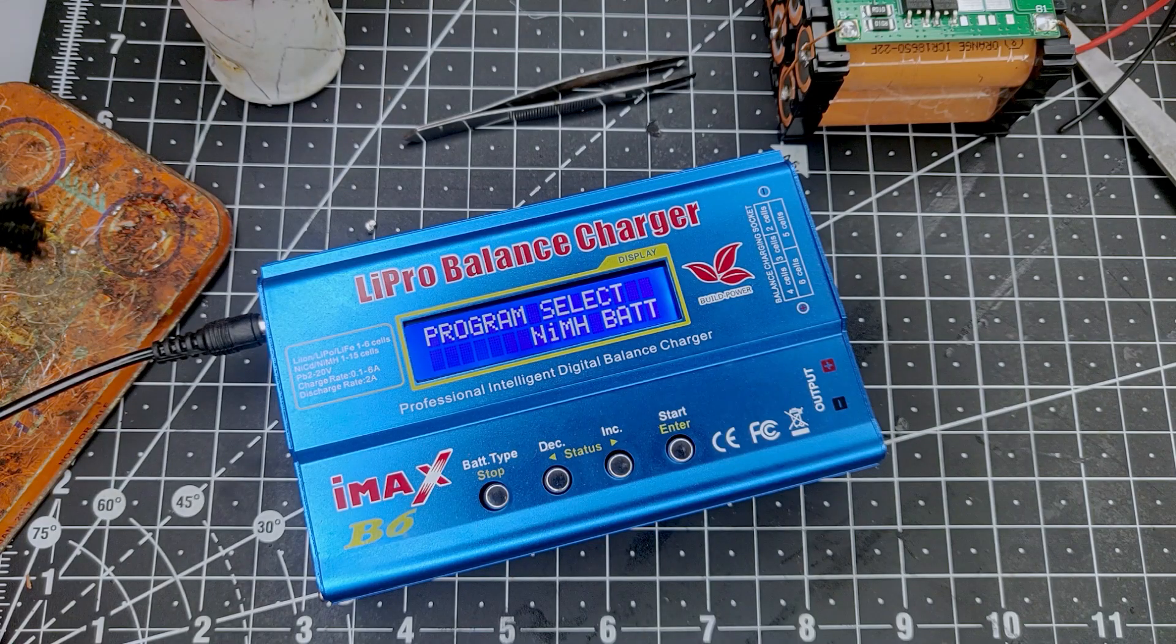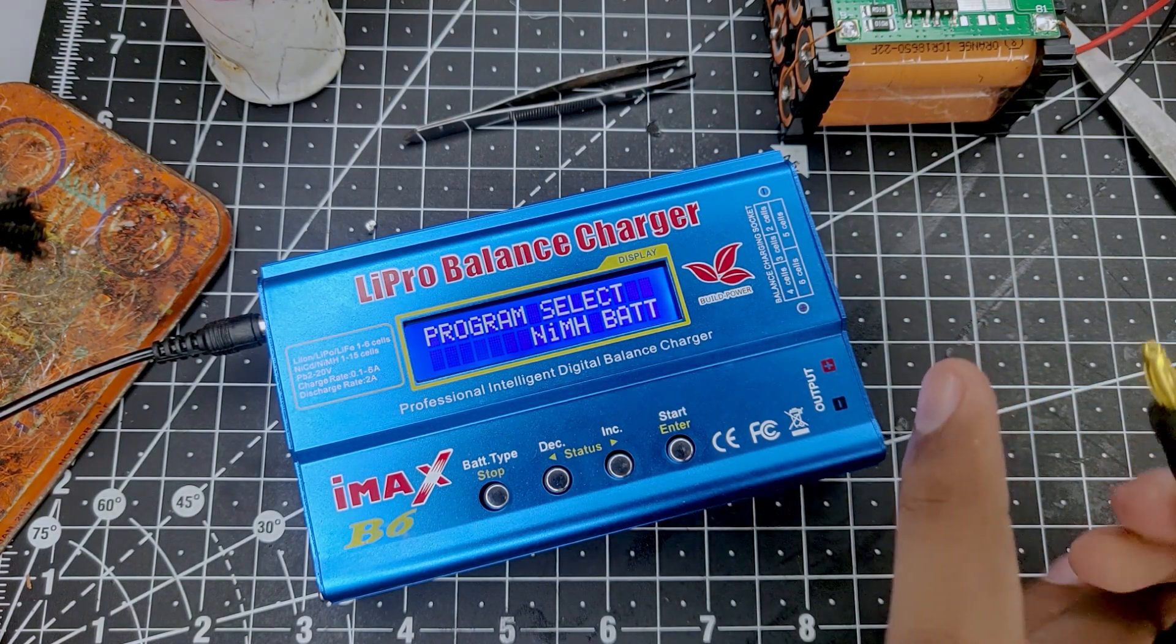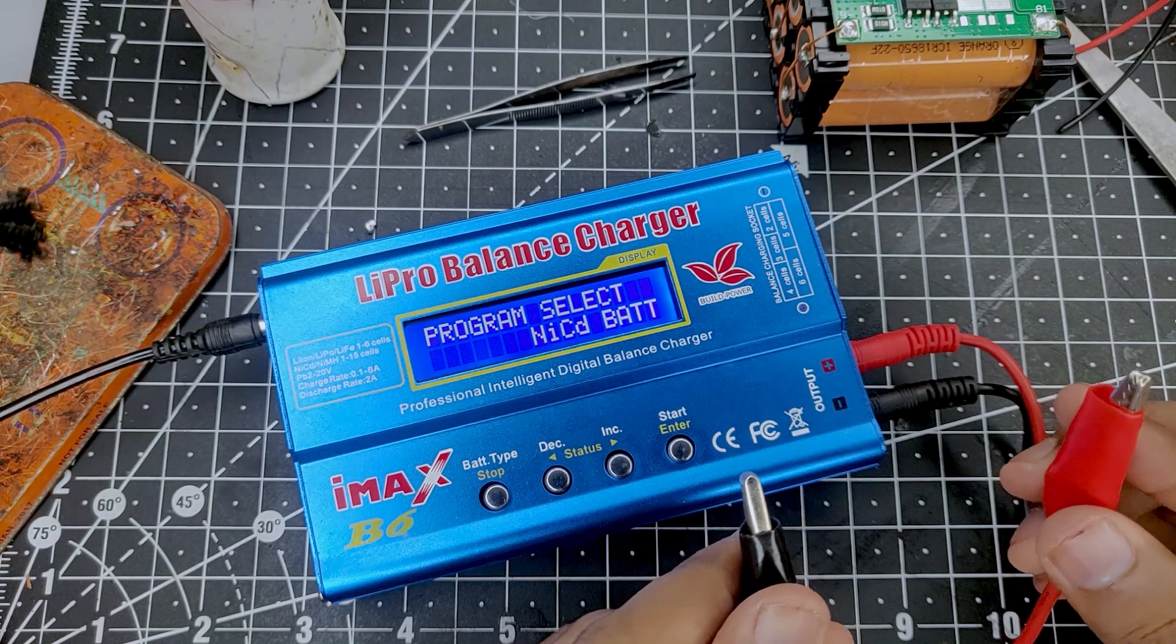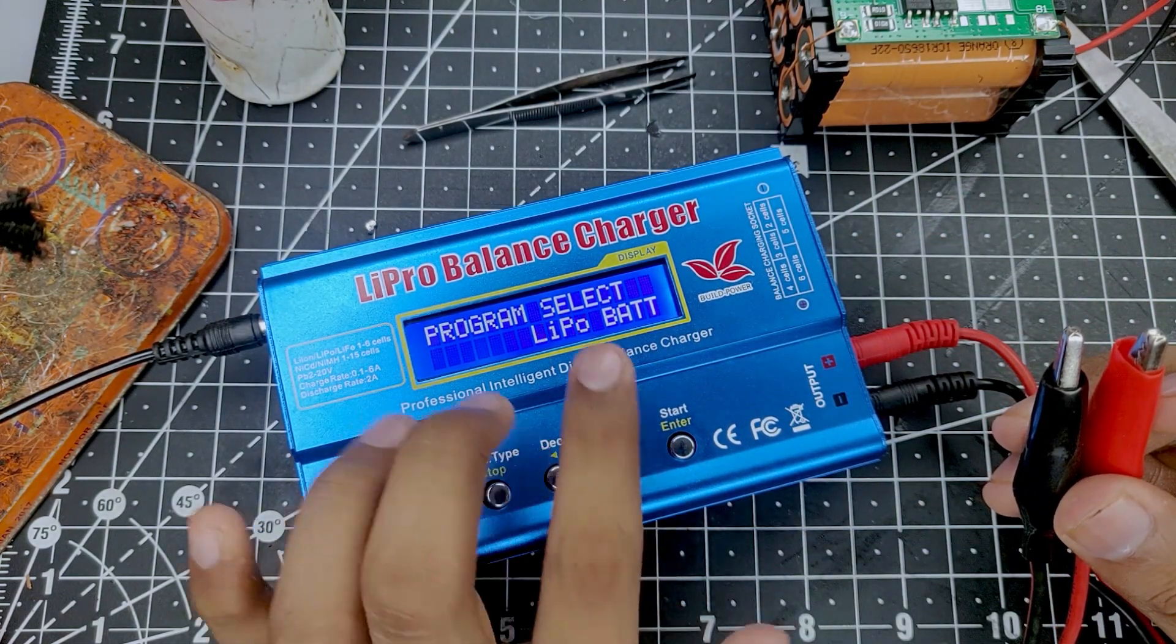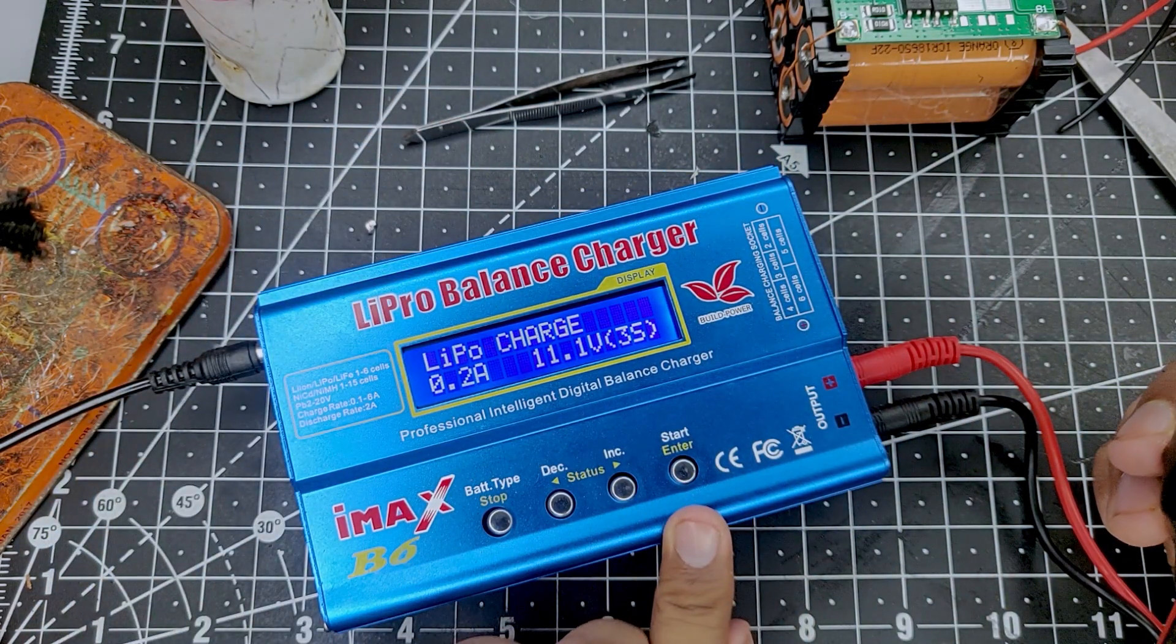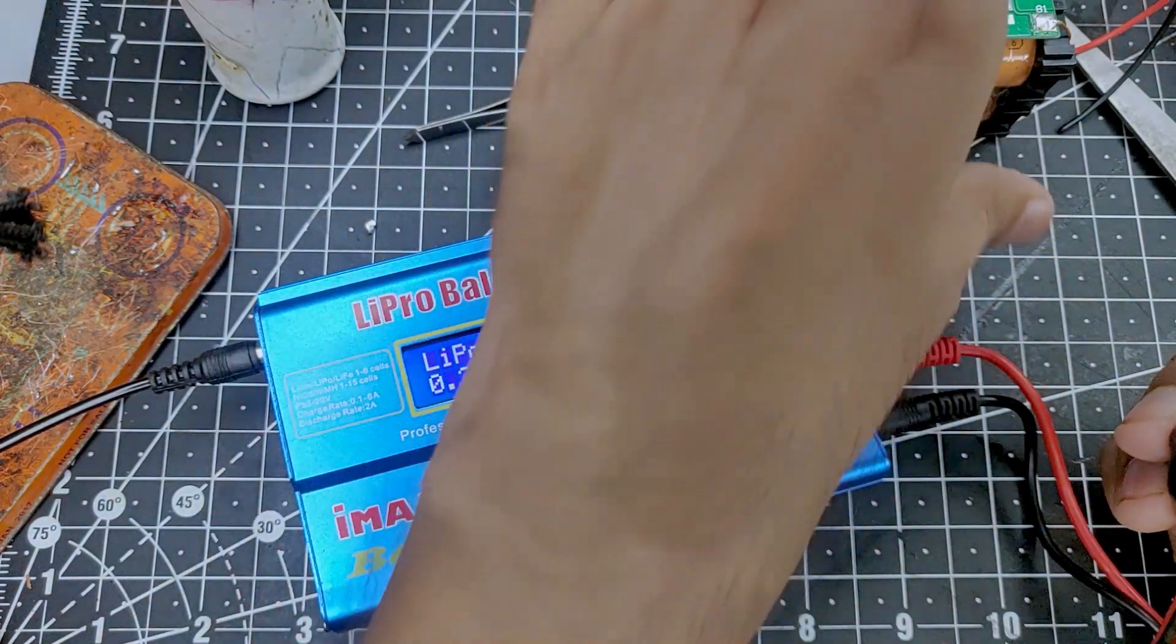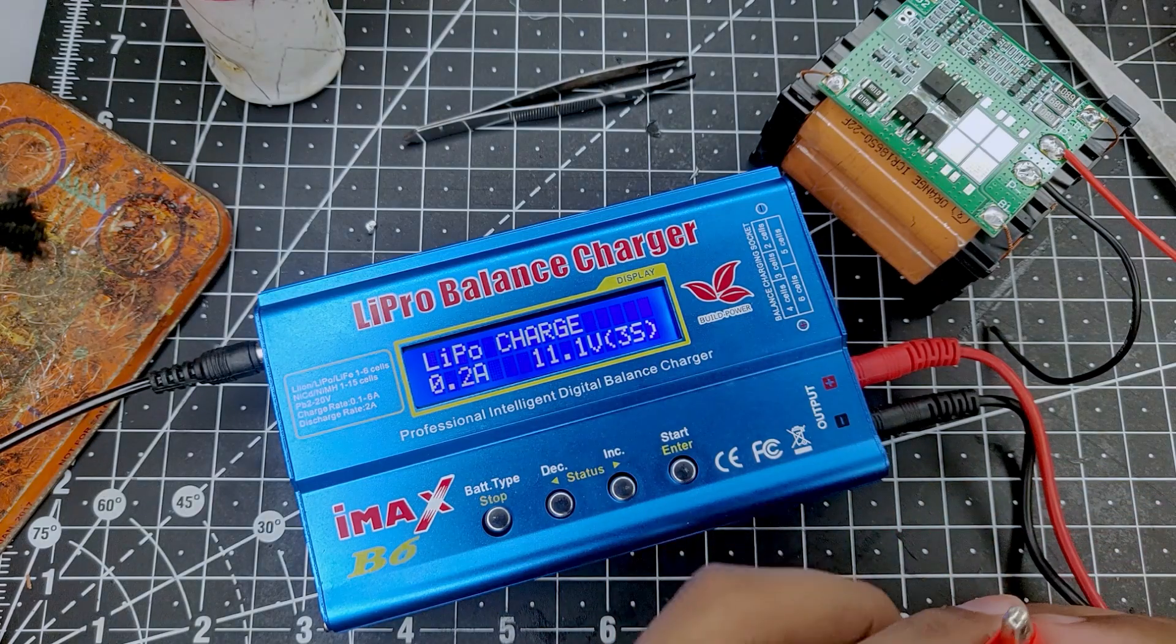Here is the charger. We have output option right here - positive and negative. Let's connect the wires first just like so. At the end I have some alligator clips to clip onto the battery. Let me select the right battery which is the lipo battery in this case, but it's actually lithium-ion so don't worry about it. I'll select lipo charge at 0.2 amperes at 11.1 volts - you can change it according to your battery.